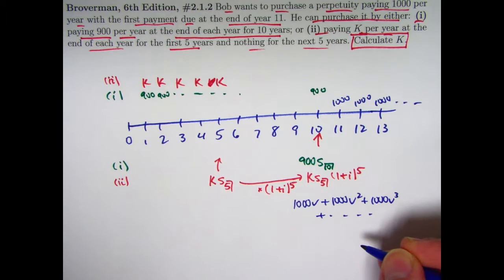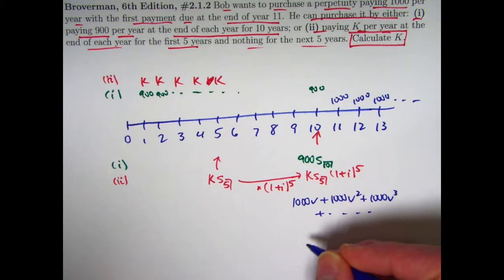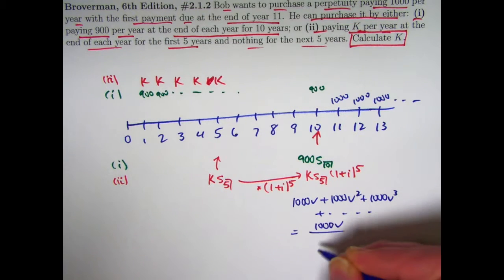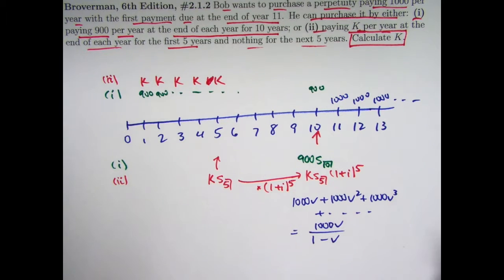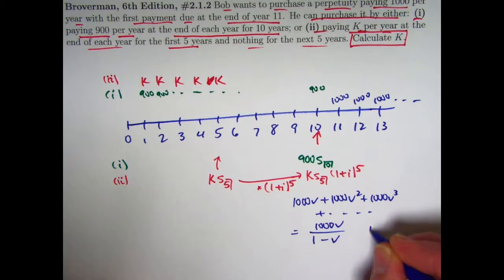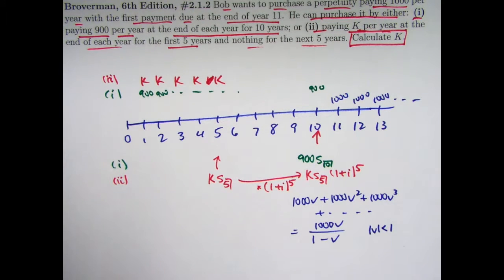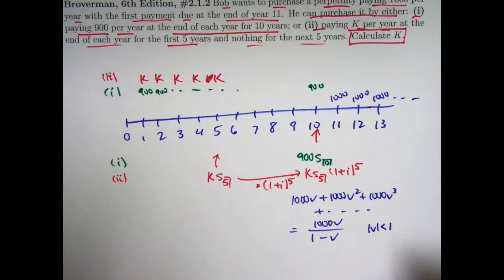And it's an infinite geometric series, in fact, that will converge to the first term, 1000v, divided by one minus the common ratio, which is going to be v, as long as that common ratio has absolute value less than one. V, for us in these situations, always is between zero and one, so there's no problem. This converges to that.